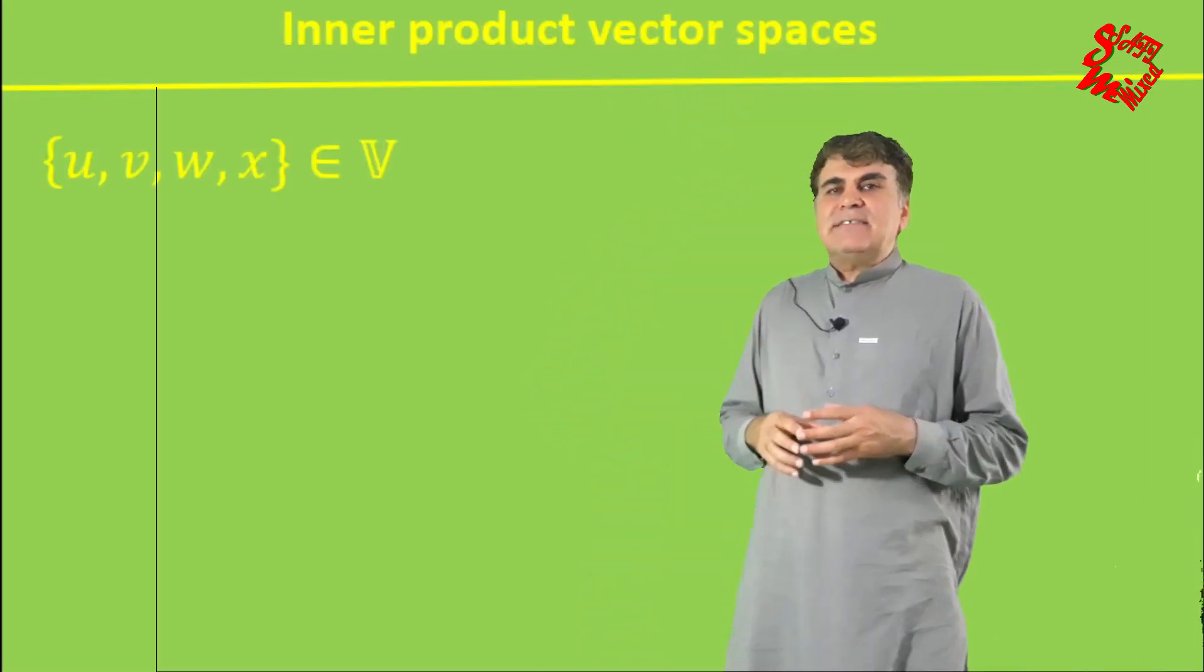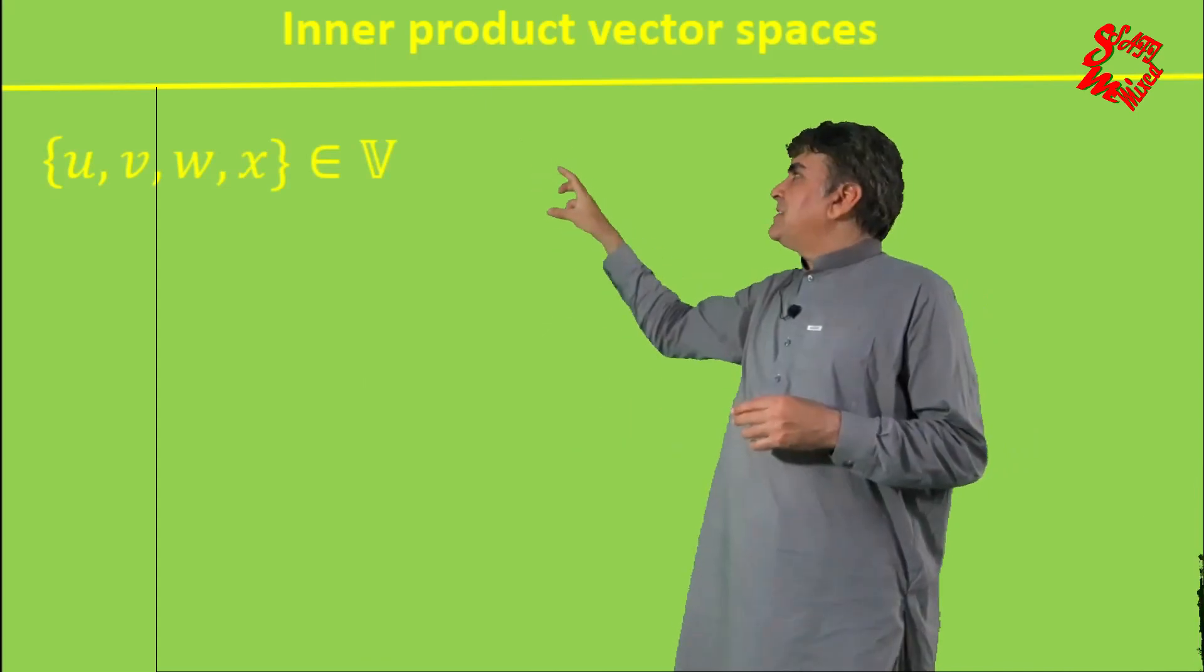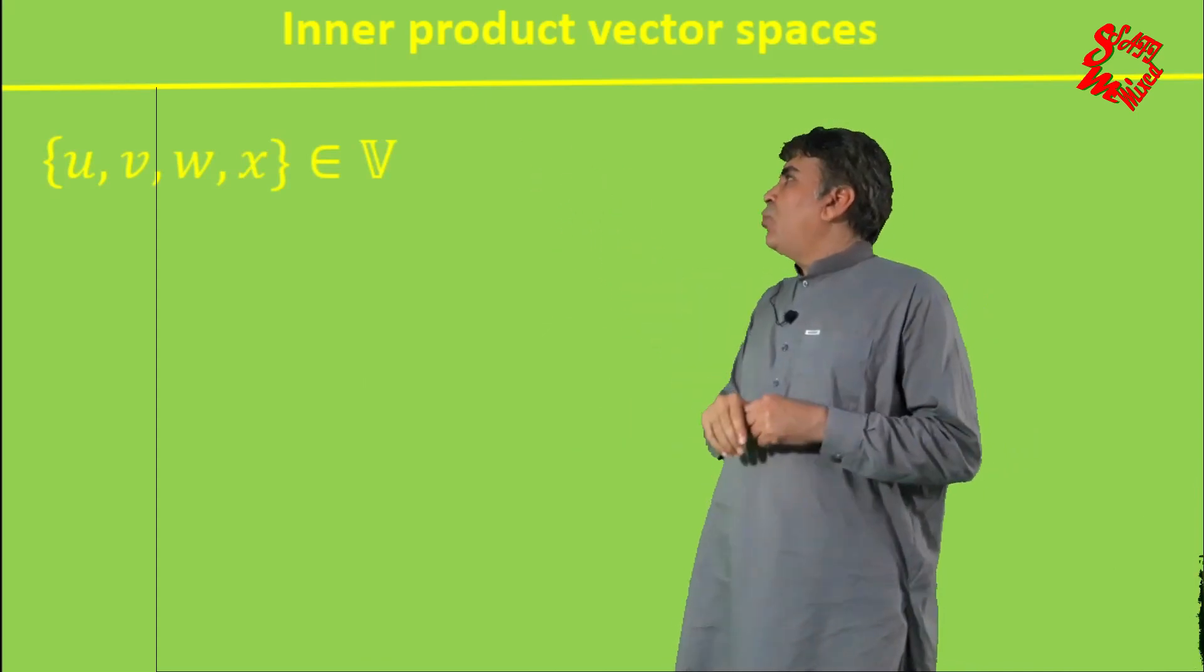In the previous two videos on vector spaces, you may have noted that I was using the last English alphabet for the elements of vector space, such as u, v, w, x. That is, I consider u, v, w, x belongs to the vector space V.